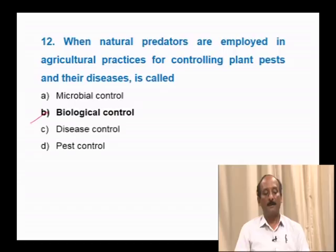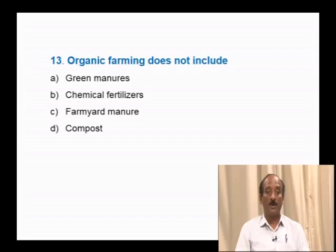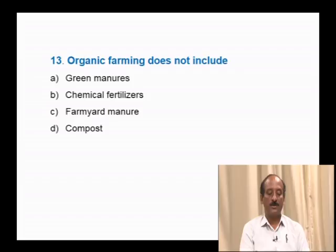Question number 13: Organic farming does not include — green manures, chemical fertilizers, farm yard manure, compost. In organic farming, chemical fertilizers are not used. Organic matter from plants such as green manure, farm yard manure and compost are commonly used. The correct answer is option B: chemical fertilizers.